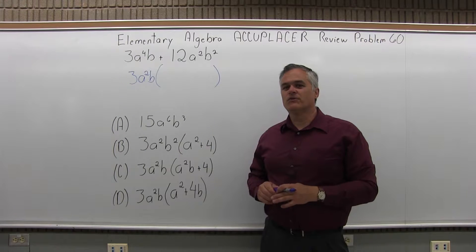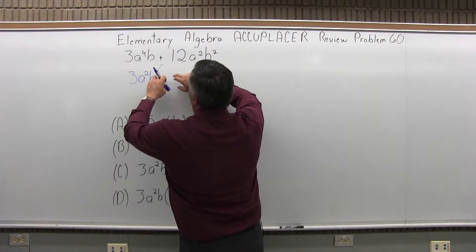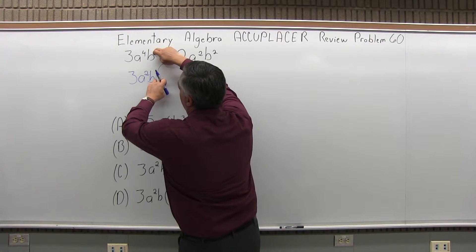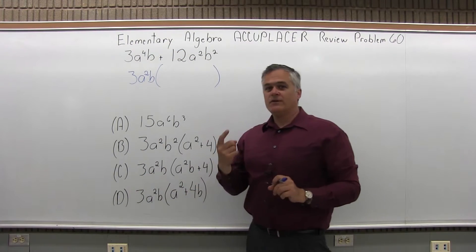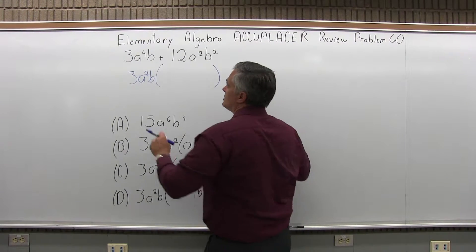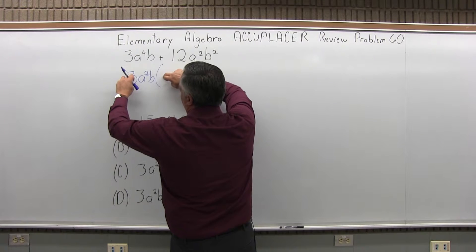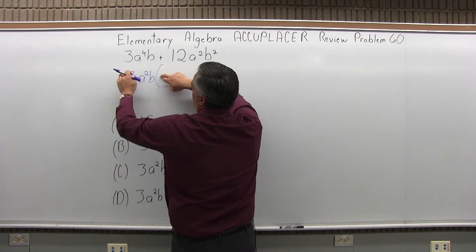Now that I've decided what to put in front of the parentheses, now I ask myself, what do I multiply in the parentheses to get back what was here originally? Well, again, we have numbers, A's and B's, numbers and two different types of variables. So first of all, look at just the numbers. Forget the A and B. Three times what will give me back a three? Well, times one.